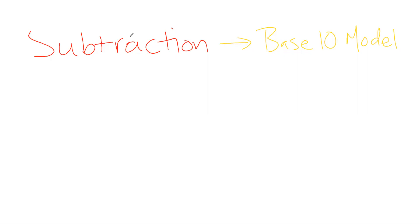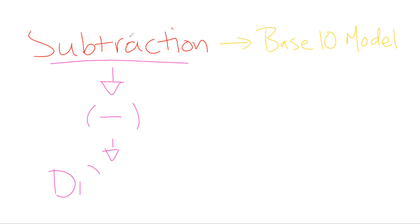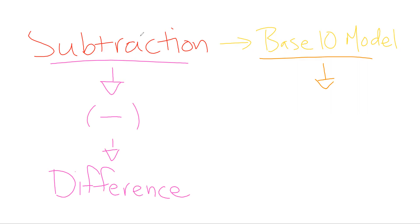I like to break down these words. So subtraction — we are minusing or taking away, and that is that keyword of finding the difference, right? What is the difference between the numbers? And we do so by subtracting. And then base 10 is that idea of how do we model numbers — if I have one, I do a little dot; I do a long if I have 10; and a square if I have 100.